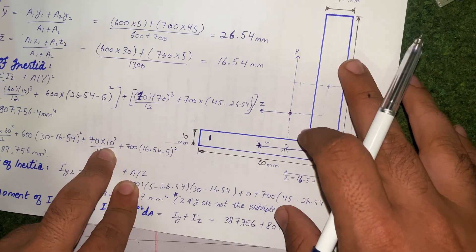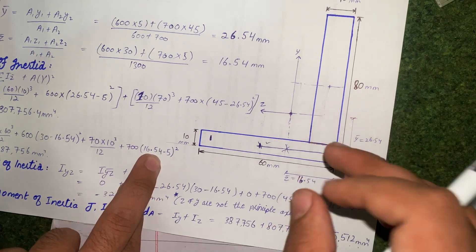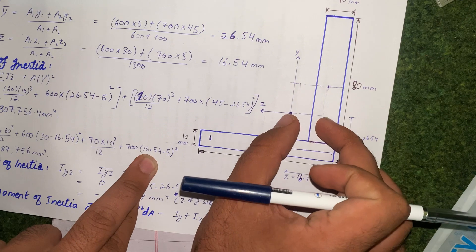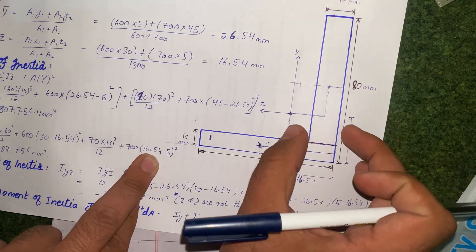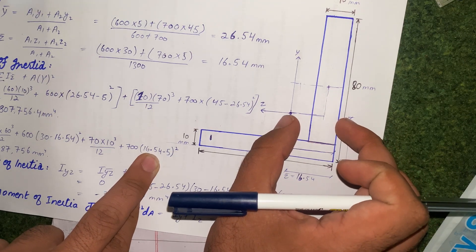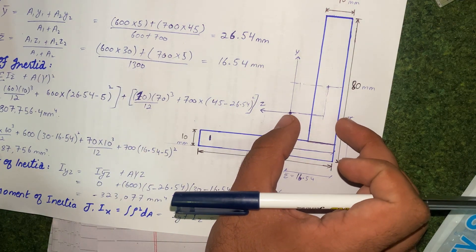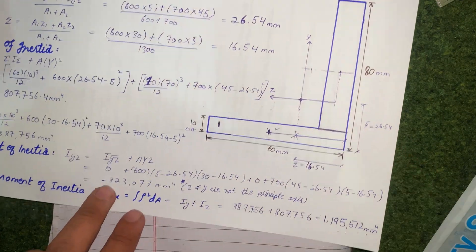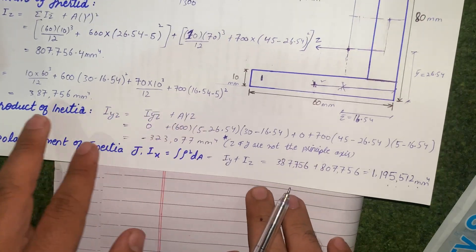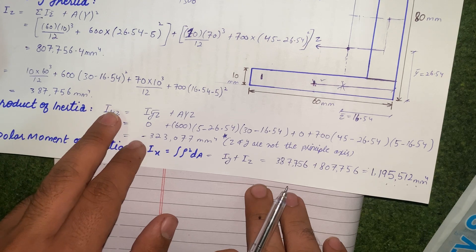For rectangle 2 about the y-axis, the centroid-to-centroid horizontal distance is 16.54 − 5 = 11.54 mm. When all values are calculated, the final answer for Iy comes out as 387,756 mm⁴.